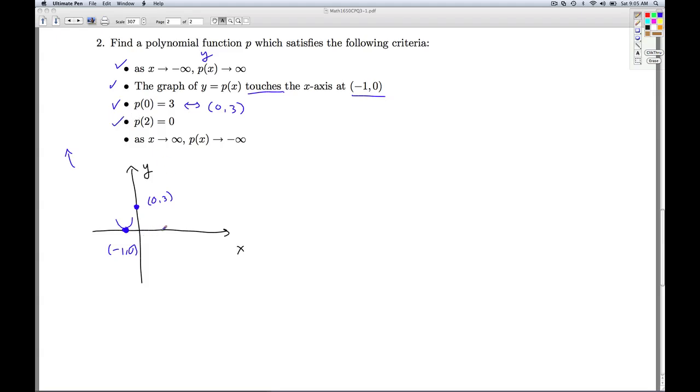P of 2 is 0 is giving us another x-intercept. Now it doesn't tell us what's happening at 2, 0, whether it touches or crosses. But this last bit of end behavior is going to force it to cross. As x goes to infinity, the P of x goes to negative infinity, which means I'm exiting down here in quadrant 4. So we can mentally connect this stuff up and get the graph of a polynomial.